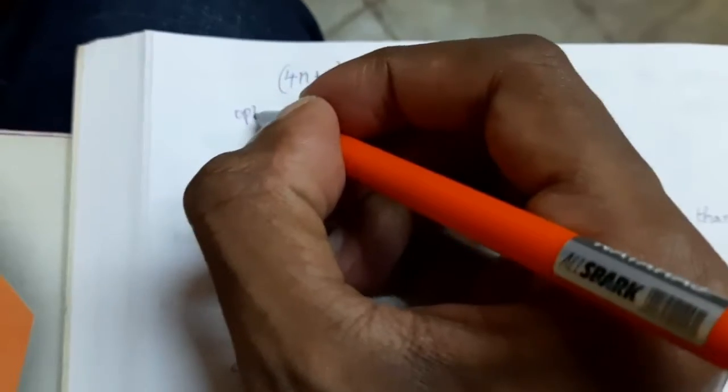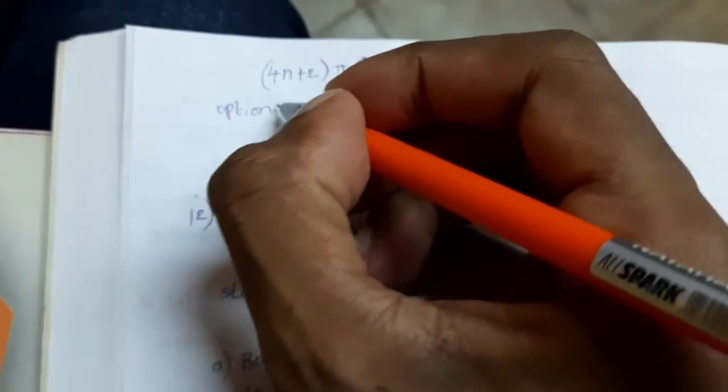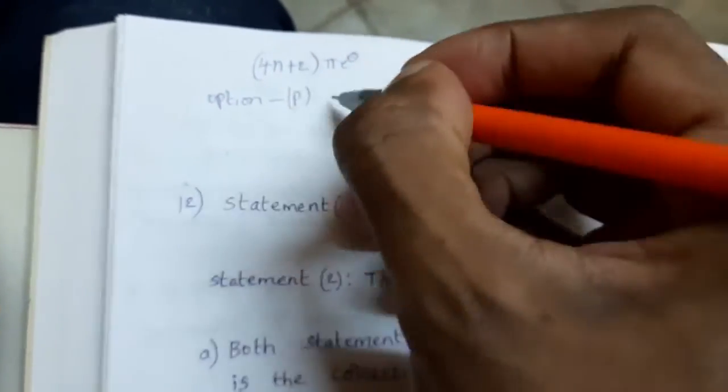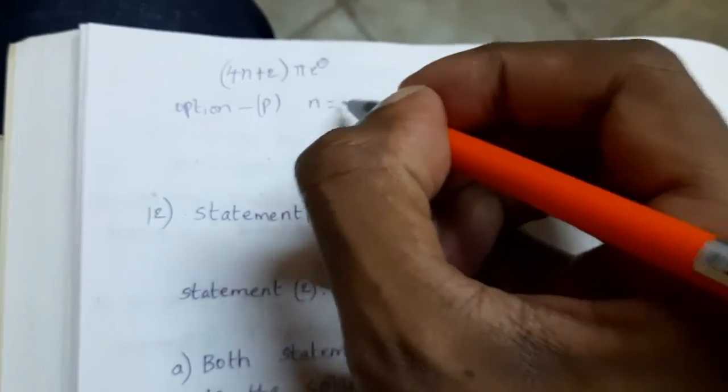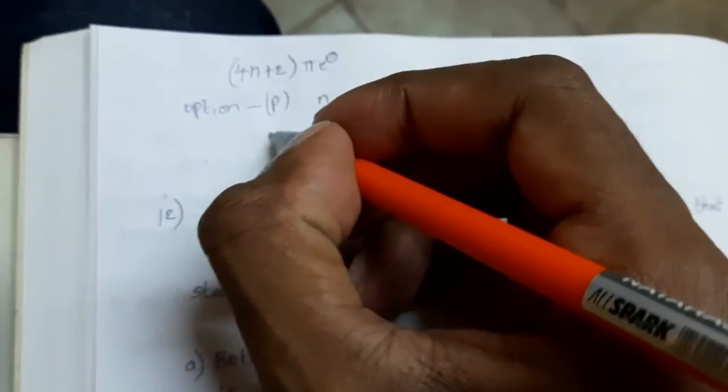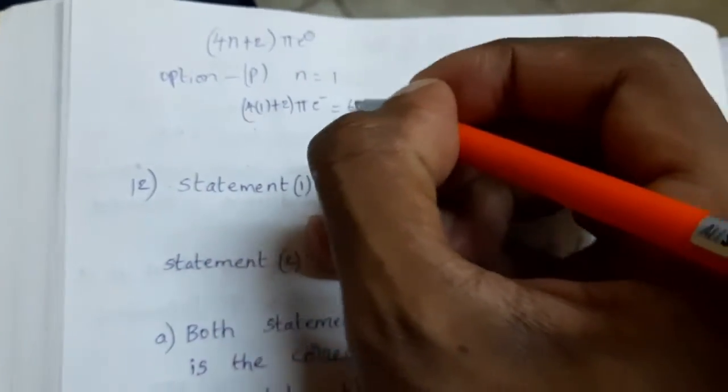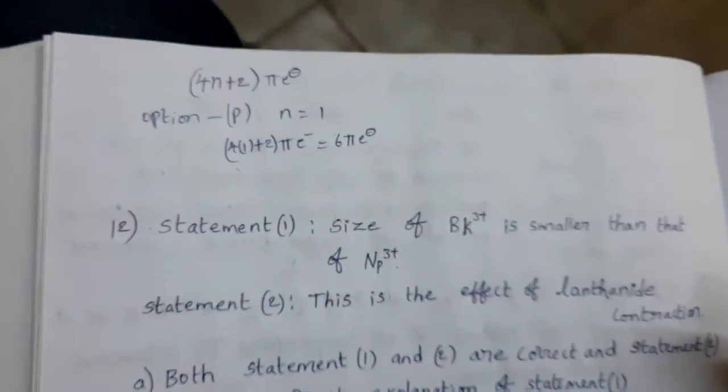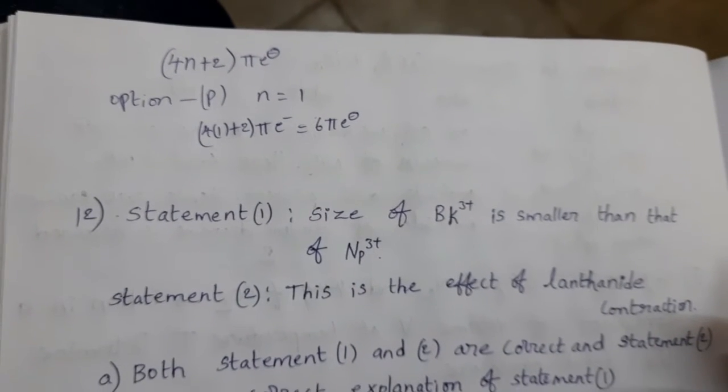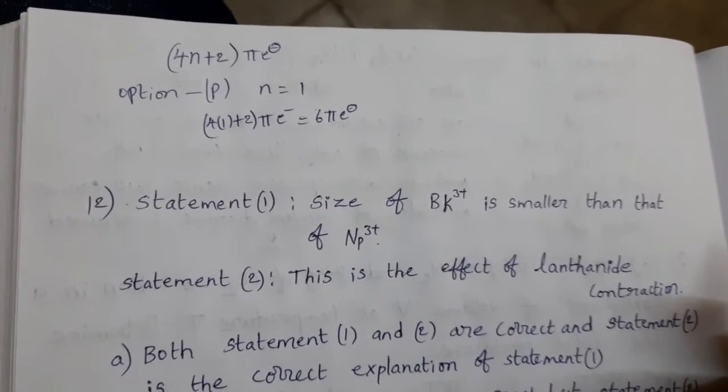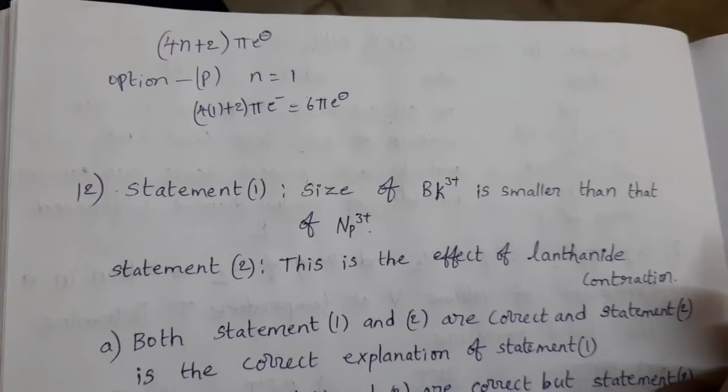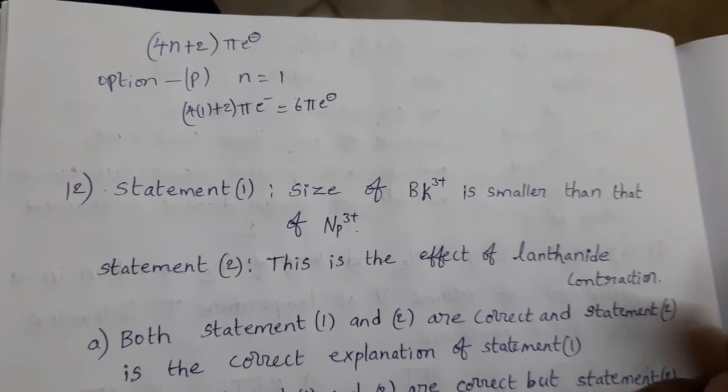For option P, n equal to 1. N equal to 1 means 4 into 1, that equals 6 pi electrons. So in that P species, cyclopentadiene anion having 6 pi electrons, it is an aromatic species.